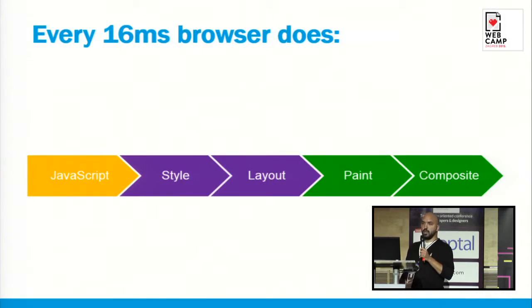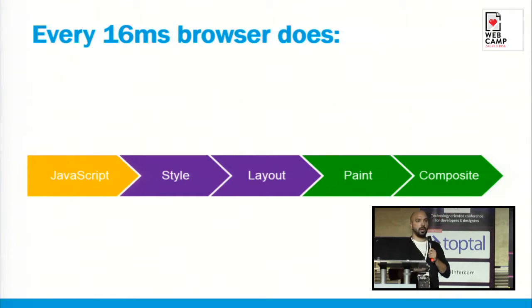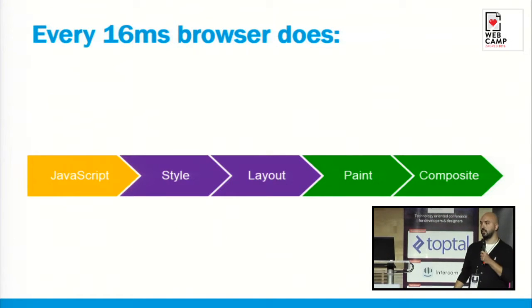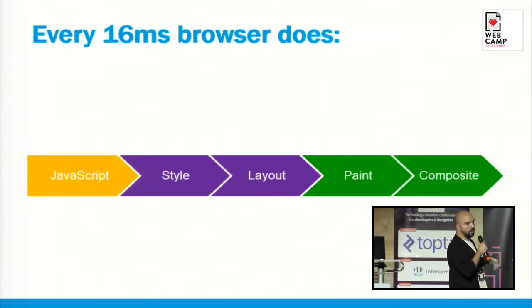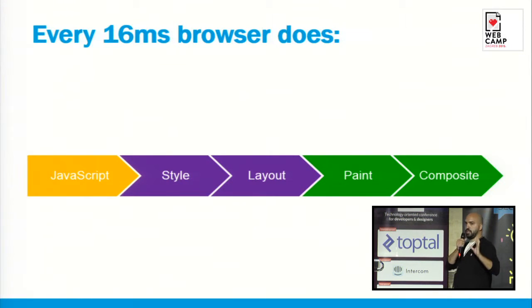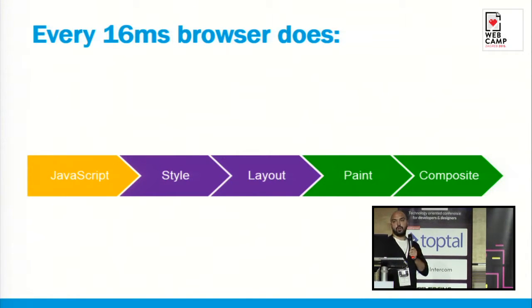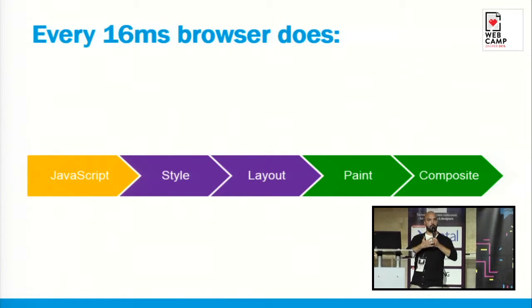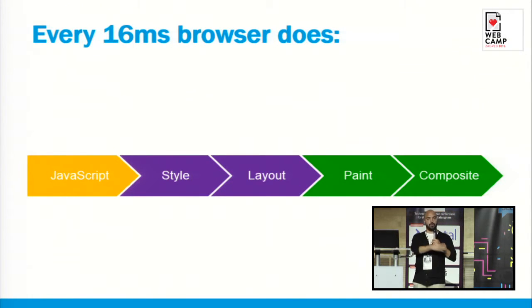So what do we have to do at each frame to make that happen? Obviously we have to run some JavaScript. After that, we calculate the styles that will apply to our elements. Then we calculate geometrics — where our elements are positioned on the screen. After that, we transform those elements into pixels that will be drawn on the screen, and make them composite in composite layers so some elements are shown on top of others.